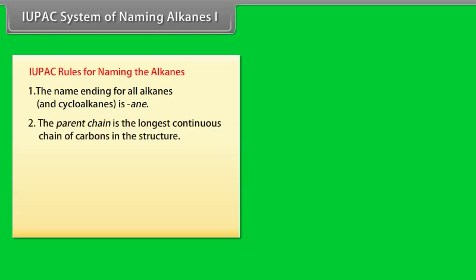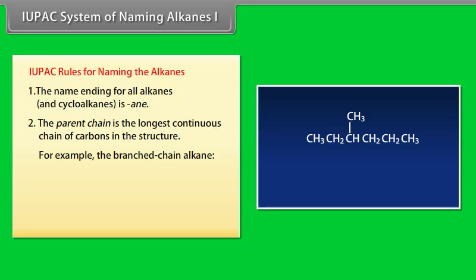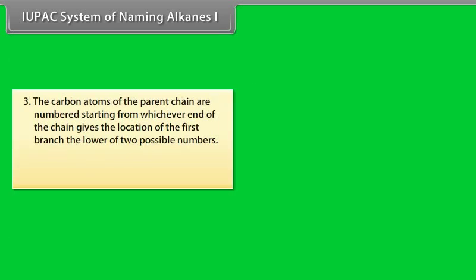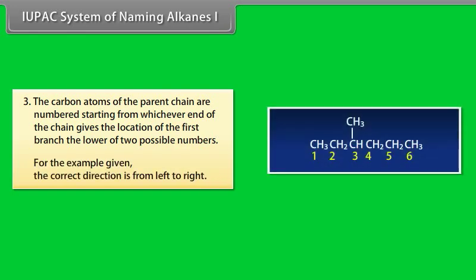IUPAC rules for naming alkanes: Number 1, the name ending for all alkanes and cycloalkanes is -ane. Number 2, the parent chain is the longest continuous chain of carbons in the structure. For example, the branched chain alkane is regarded as being made from the parent CH3CH2CH2CH2CH2CH3 by replacing an H on the third C from left with CH3. Number 3, the carbon atoms of the parent chain are numbered starting from whichever end gives the location of the first branch the lower of two possible numbers. For the example given, the correct direction is from left to right.